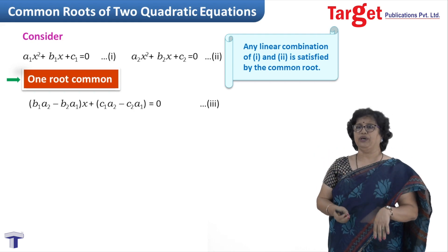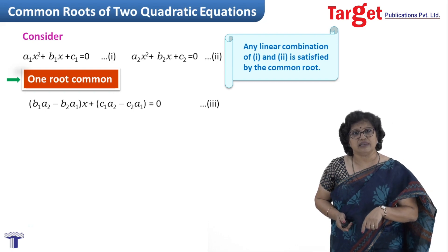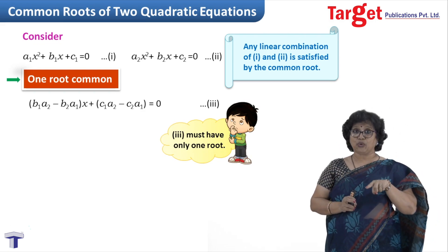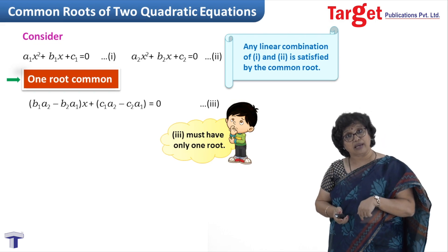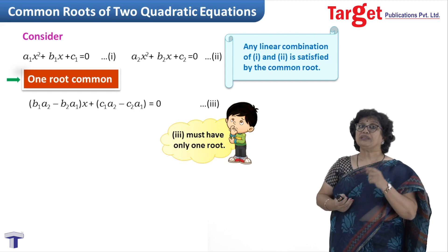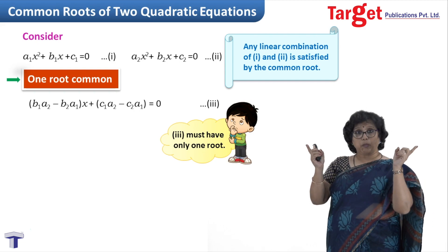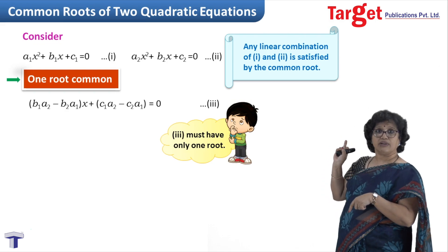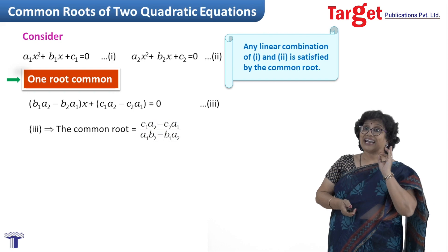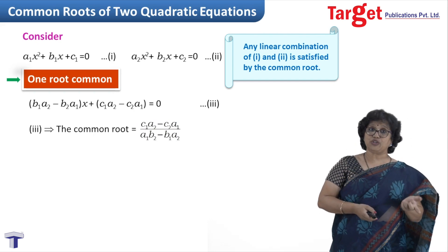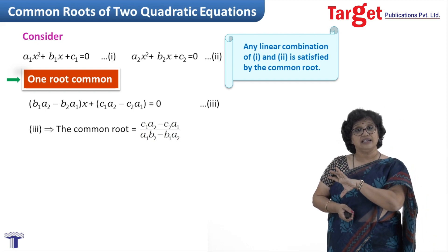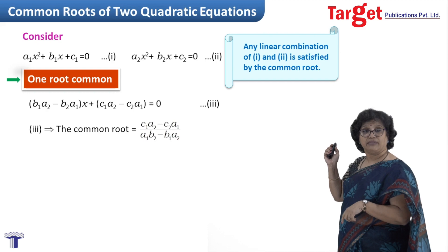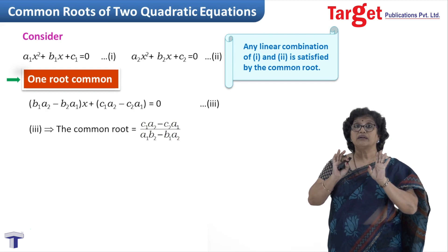This is a linear equation, and a linear equation can have only one root. On the other hand, since it is a combination equation, it is satisfied by the common root. Putting those two things together, the common root must be exactly the root of this linear equation. Solving it, I get x = (c1·a2 − c2·a1) / (a1·b2 − b1·a2). That is the common root. The entire process involved eliminating the x² term from both equations.